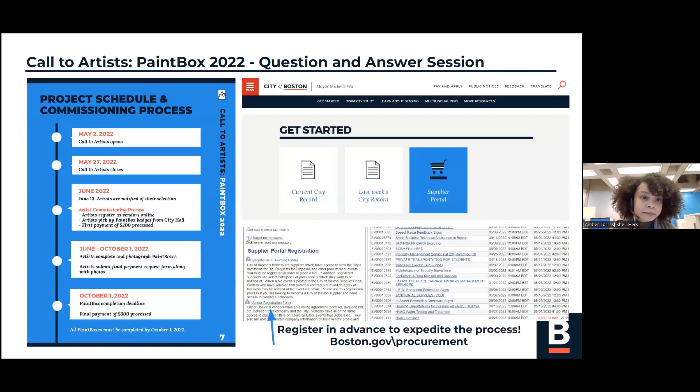Page seven outlines the project schedule and the commissioning process. Right now, we're in step one. The call is open, and we're answering questions. For the next step, the call closes, and that will be on Friday, May 27th at 5 p.m. Once the call closes, step three begins. A working group will review submissions and select finalists. The Boston Art Commission, also known as the BAC, will review and have the final vote on all proposed Paintbox designs. Next step is the commissioning process. Selected artists must pick up official Paintbox badges from City Hall and make sure to register as vendors with the City of Boston in order to receive a stipend.